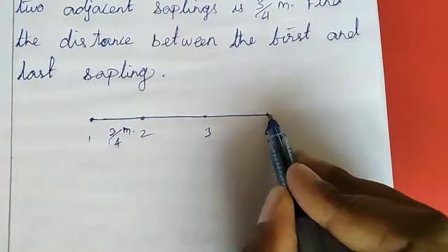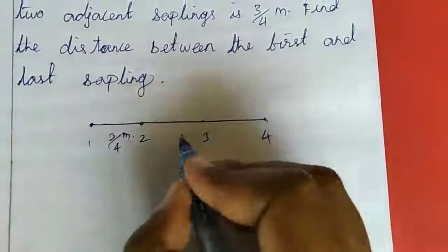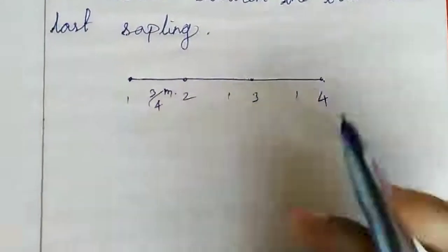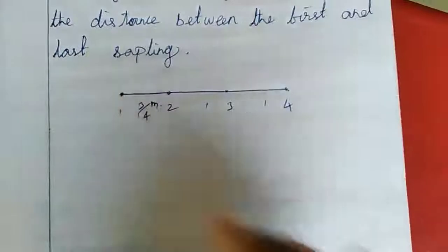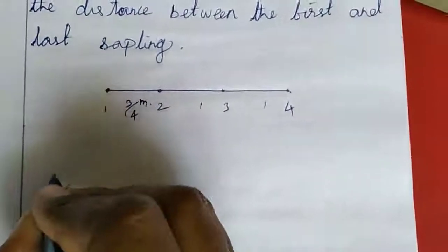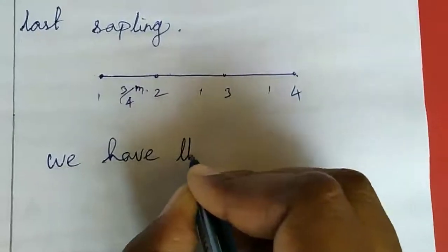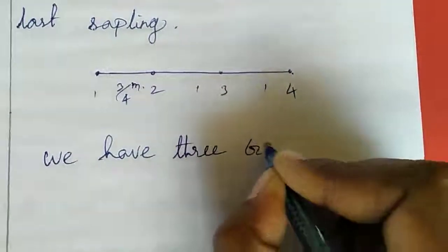That is the first and last one, that is the distance. So here we have how many gaps? 3 gaps, we have 3 gaps.